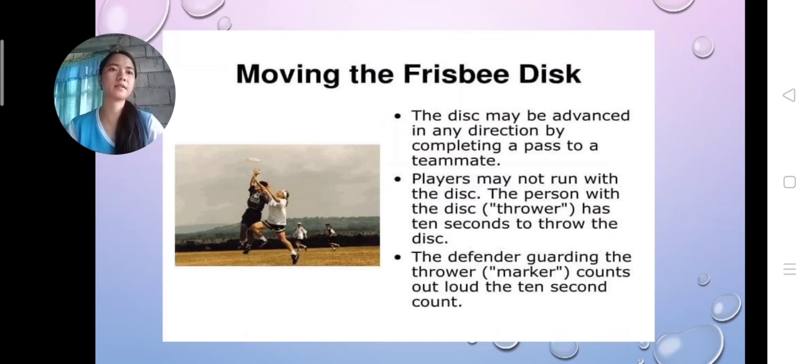Moving the Frisbee disc. The disc may be advanced in any direction by completing a pass to a teammate. Players may not run with the disc. The person with the disc, or the thrower, has ten seconds to throw the disc. The defender guarding the thrower, or the marker, counts out loud the ten second count.